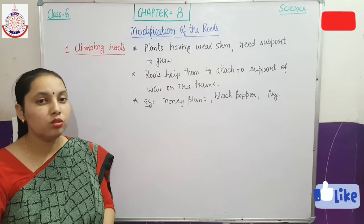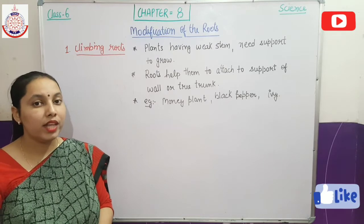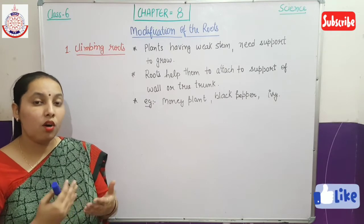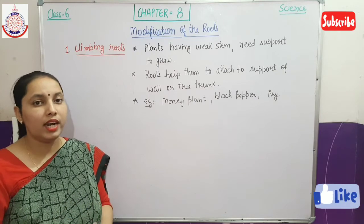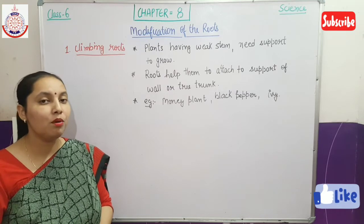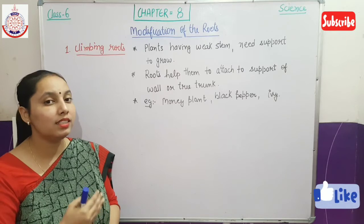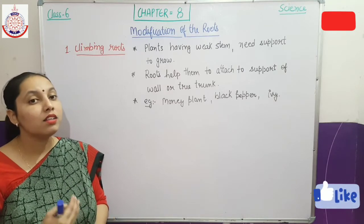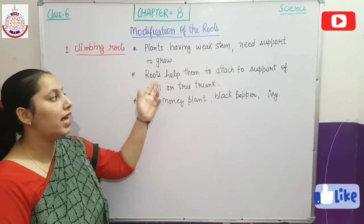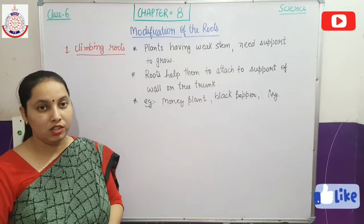As you also know, some plant stems are very, very weak, so those plants cannot stand on their own. They need some support. To support such stems, the roots are modified. These roots help the plant to attach to a wall or to a tree trunk.